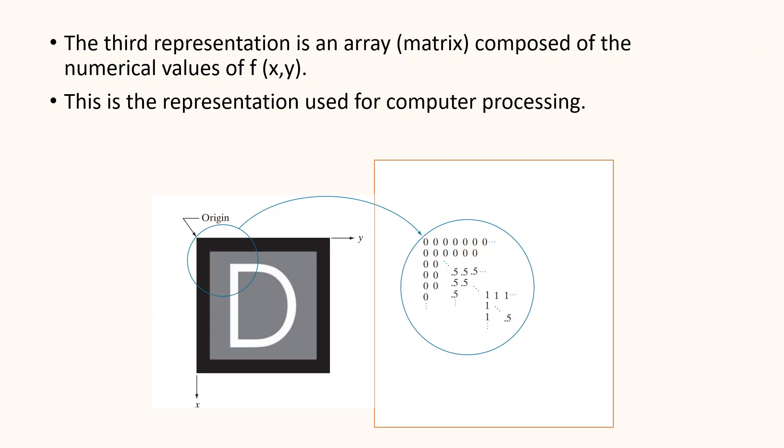The third representation is an array or matrix composed of numerical values of f. This is the representation used for computer processing.